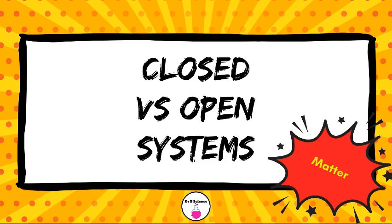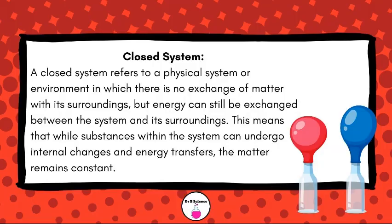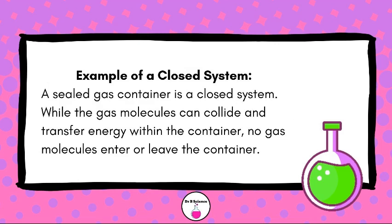Closed versus open systems. A closed system refers to a physical system or environment in which there is no exchange of matter with its surroundings, but energy can still be exchanged between the system and its surroundings. This means that while substances within the system can undergo internal changes and energy transfers, the matter remains constant.